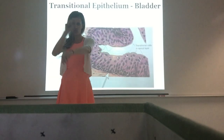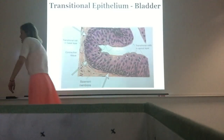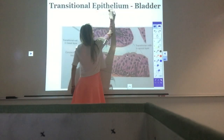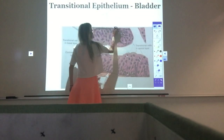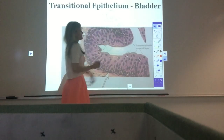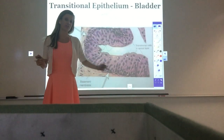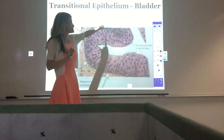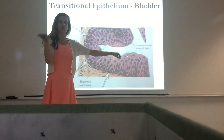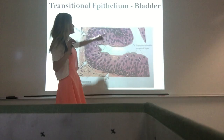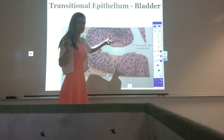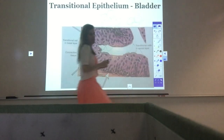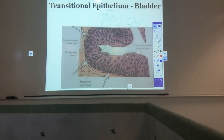Remember: simple squamous tissue — the one layer of flat cells — when viewed from the top looks like tiles with a nucleus in the middle. In connective tissue, we're going to look at adipose tissue, which looks very similar to simple squamous but there's no nucleus in the middle. If it has a nucleus in the middle it's simple squamous epithelial tissue; if it's fat cells with no nucleus in the middle, that's adipose tissue. We'll talk more about that next.